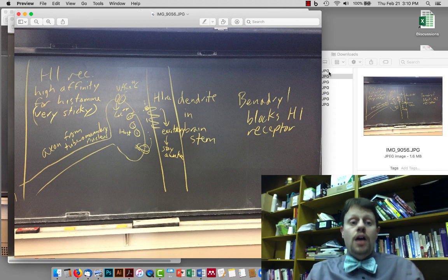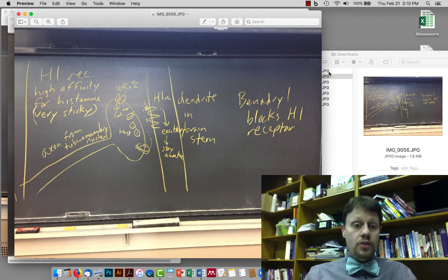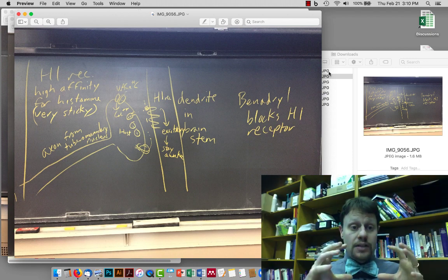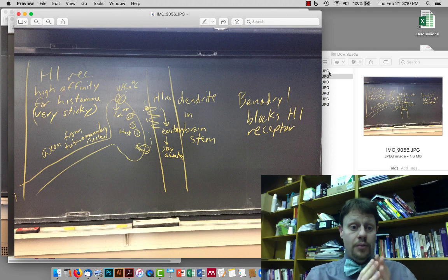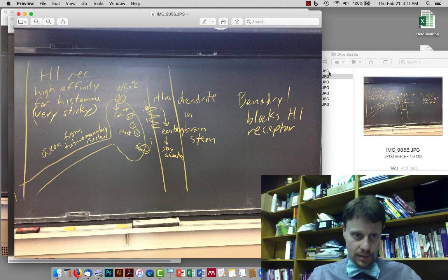The next thing I wanted to talk about is the whole business with histamine. As we talked about in class, the histamine-producing cells have their cell bodies in the tubero-mammillary nucleus in the brainstem. Their axons project all throughout the brain, and there are two projections that we're interested in with histamine.